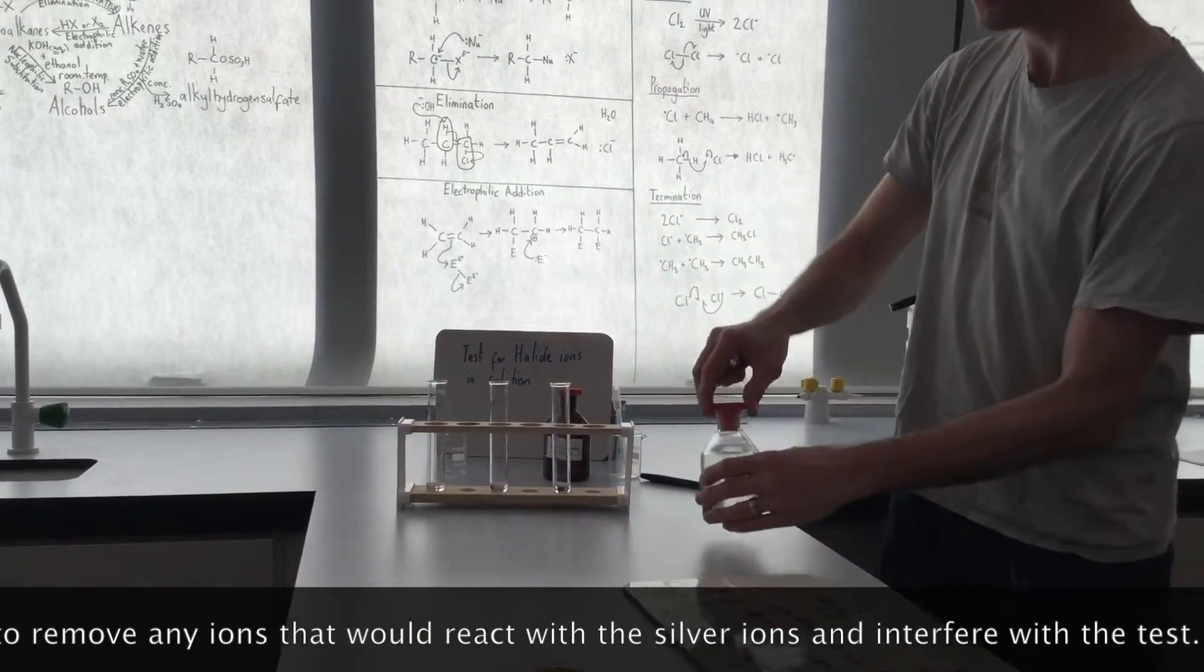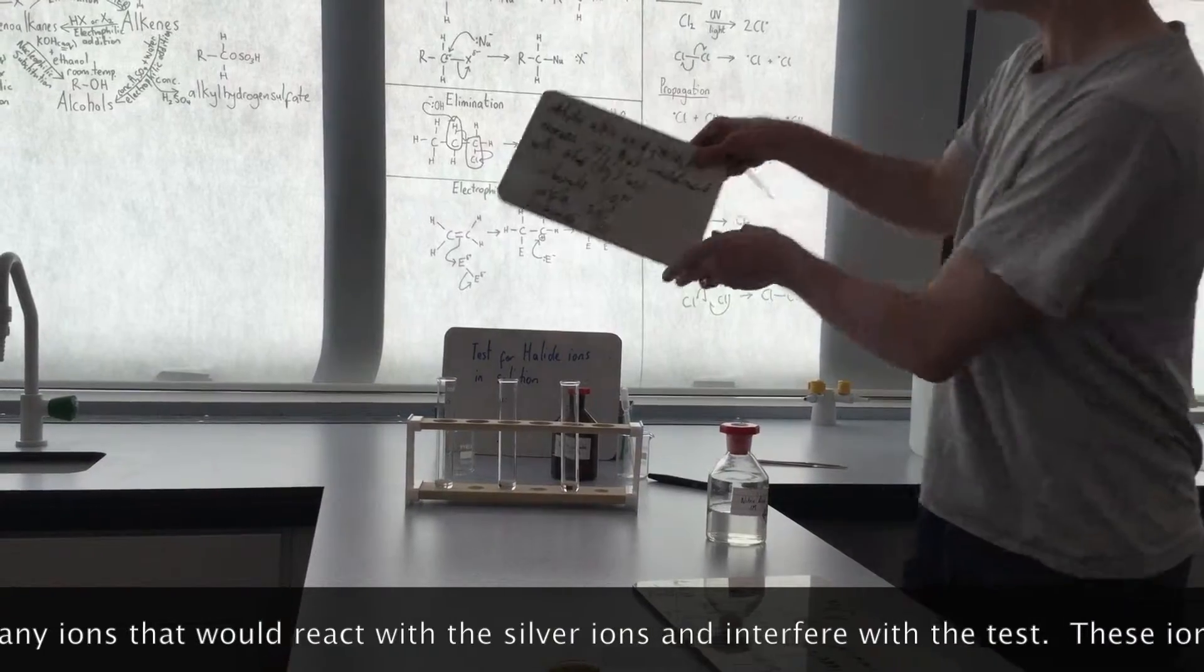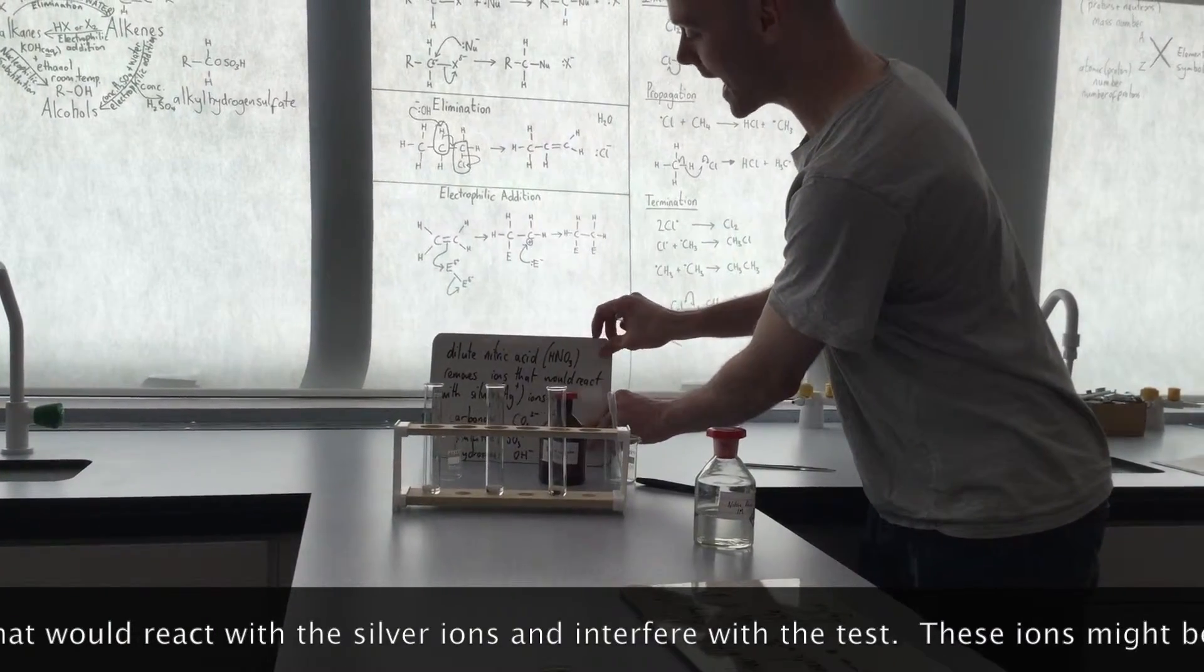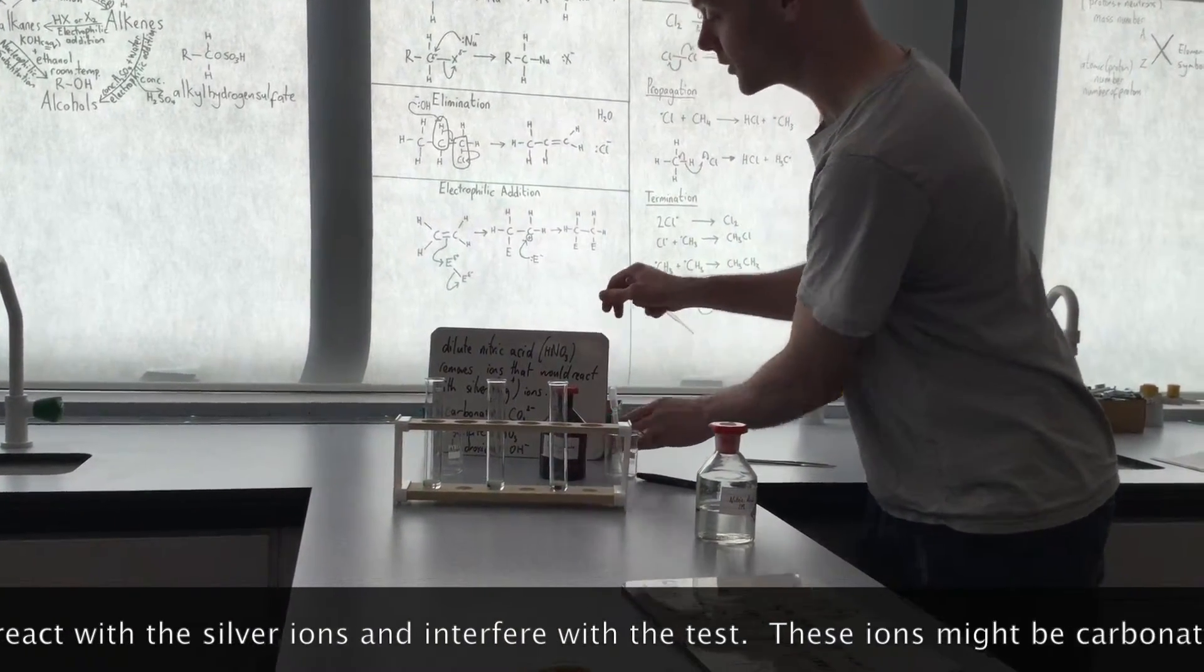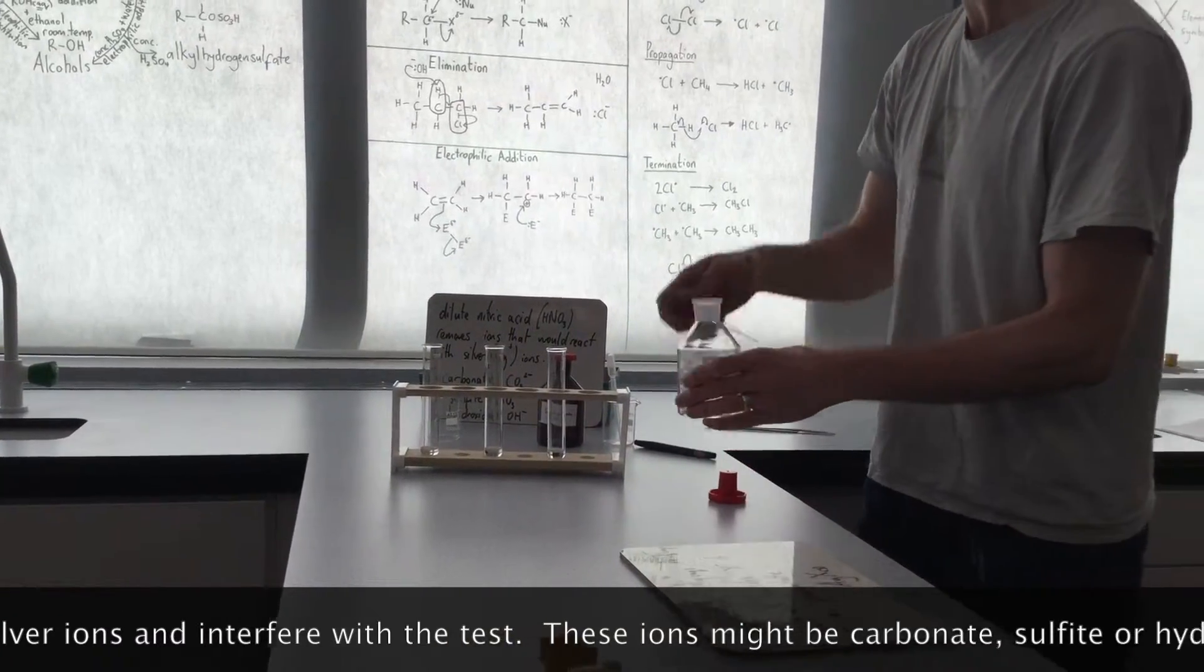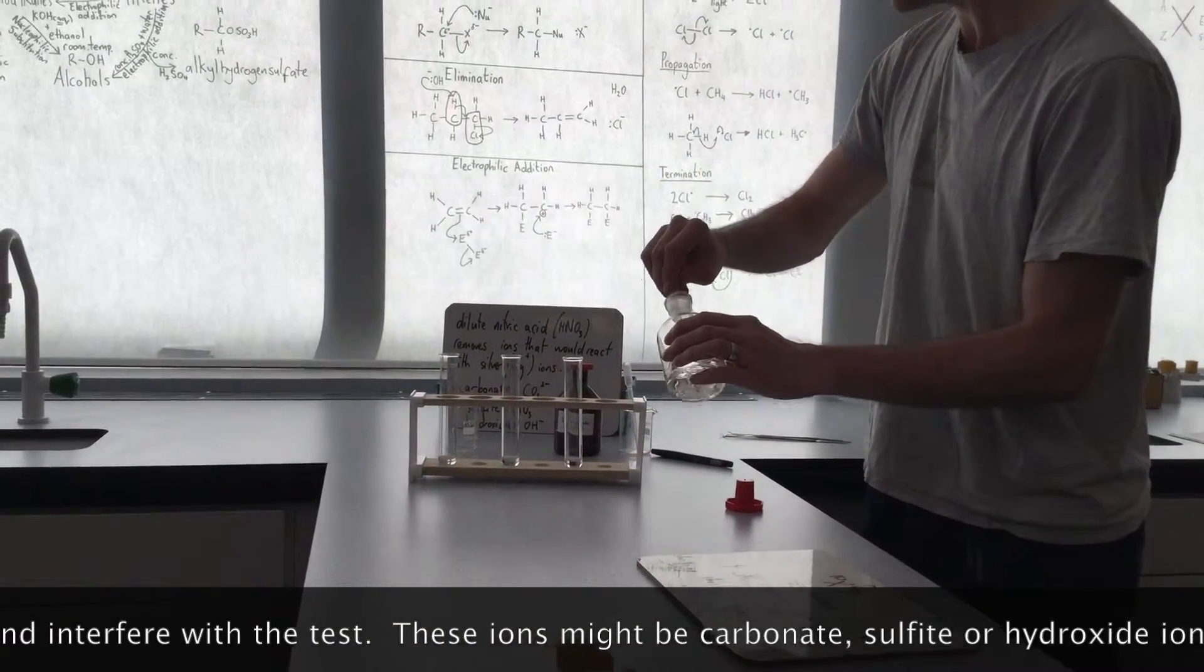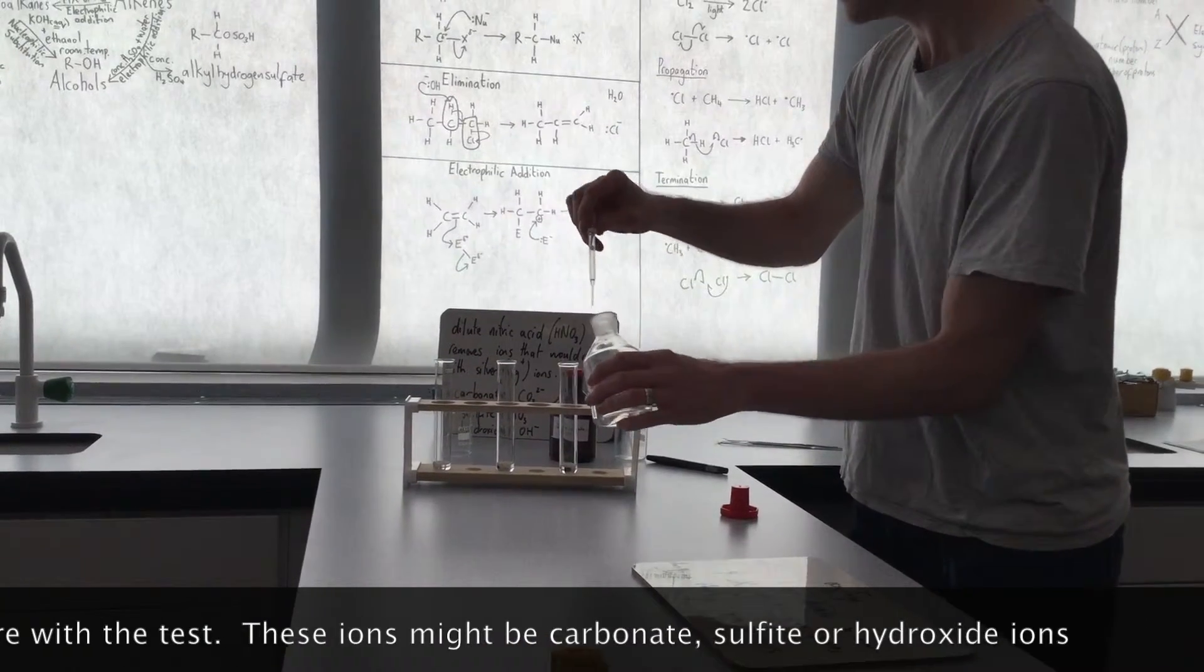But before we do, we're going to add some nitric acid. And nitric acid is going to react with any other ions that would also react with the silver ions. Okay, so that might be carbonate ions or it might be sulfite or hydroxide ions.